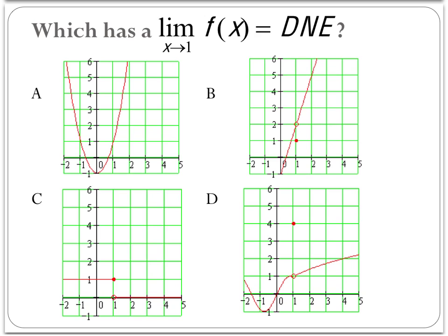I'd like you to answer that on the forum — take a guess, look at these four graphs, and see if you can figure out which one does not have a limit. The idea is that if you were to trace this graph from both the left side and the right side, as x approaches 1, the two sides should meet up — they should be going to the same value. In choice A, it definitely meets up.